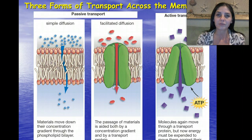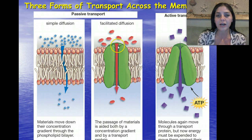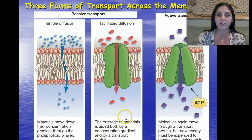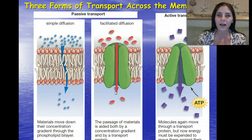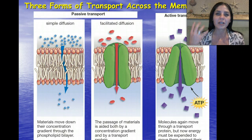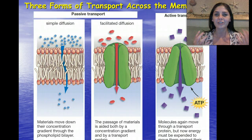We also have facilitated diffusion. This is passive, but the solute, like glucose, has to use a transport protein to get from one side to the other. It's still going down the concentration gradient, meaning it's going from a higher concentration to a lower concentration. Similar to my classroom, oxygen is diffusing into and out of my classroom through all the tiny little nooks and crannies in the ceiling and under my door.